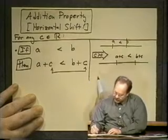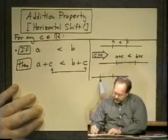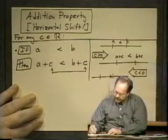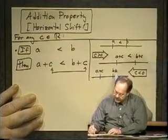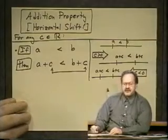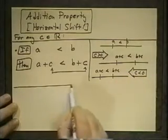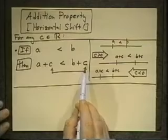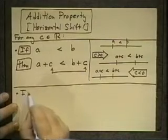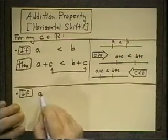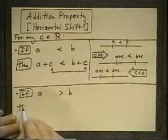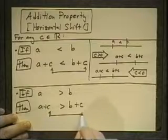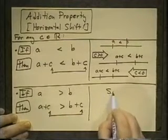All you've done is taken the original and moved them off to the right. If c is less than zero, then the opposite movement happens. If you have c less than zero, then the arrow goes the other way, and the a plus c, b plus c preserves the relationship but is now shifted off to the left. So adding a number c to either side shifts it either right or left depending on what c is. If then we have the case where a is greater than b, then the result is similar: a plus c is greater than b plus c.